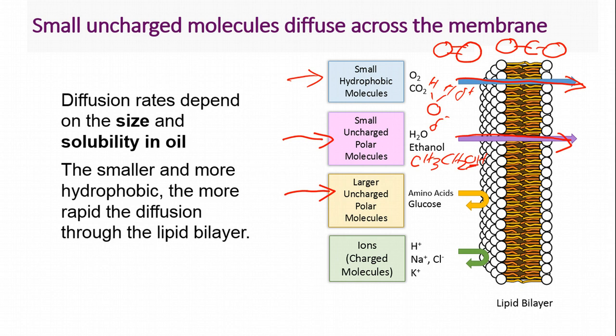Ions, even though they are small, carry a charge. A charged molecule will dissolve very poorly inside our lipid membrane interior, so ions do not pass through the membrane. Smaller and hydrophobic molecules get through — ions meet the small criteria, but they are not hydrophobic; they are quite hydrophilic. So something like a sodium ion will never rapidly pass through our bilayer membrane.